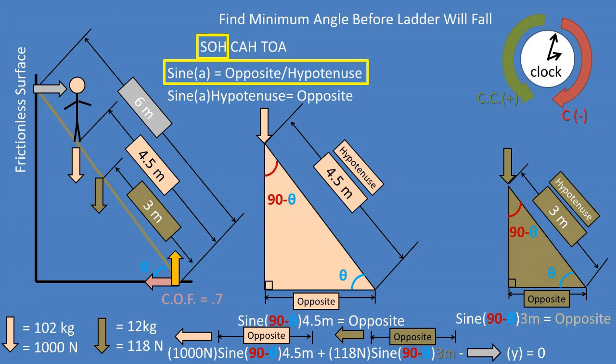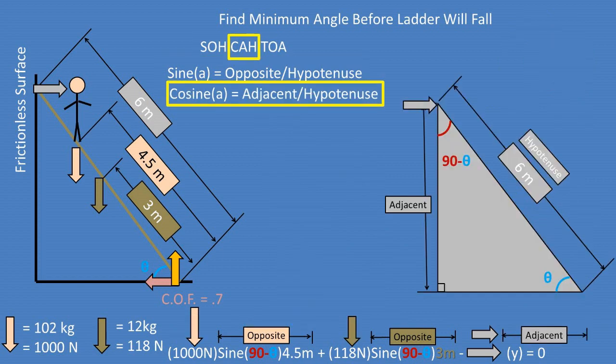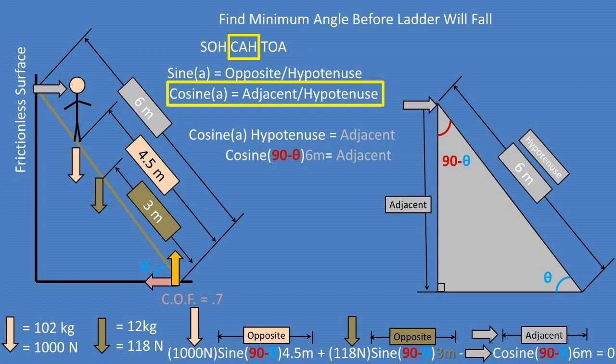We can now take our perpendicular distances and plug them into the sum-of-torques equation with the forces listed. We will also subtract the torque caused by the ladder being pressed against the wall. To find the perpendicular distance for the wall force from the pivot point, we use cosine of the angle equals adjacent over hypotenuse. Rearranging, we get: cosine(90 − θ) × 6 m equals the adjacent leg, which is the perpendicular distance from the pivot point to the force exerted by the wall. We can then plug this into the sum-of-torques equation with the wall force.